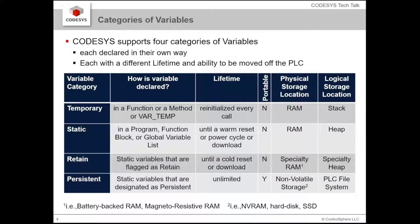You have your retain variables, which are special static variables that have been allocated to a different portion of the heap that's going to be put into a different type of memory — battery-backed memory or magneto-resistant memory or something like that.